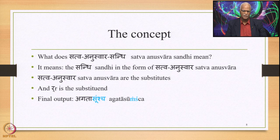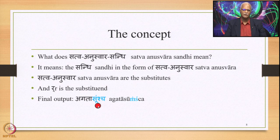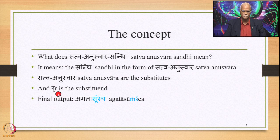We focus on Sattvanuswara Sandhi whose examples are found in abundance in Sanskrit texts. For example, in the Srimad Bhagavad Gita second chapter: 'Ashochananvashochastvam pradyavadaunshchabhashase katasun agatasunshch, nanushochanti panditaha.' In 'agatasunshch' and 'pradyavadaunshchabhashase' we have Sattvanuswara Sandhi. Also in 'Hatvartha Kamastu' we have this type of Sandhi. The substituent is R and the two substitutes are Sa and Anuswara — that is how this is Ekasthanika Dvyadesha.